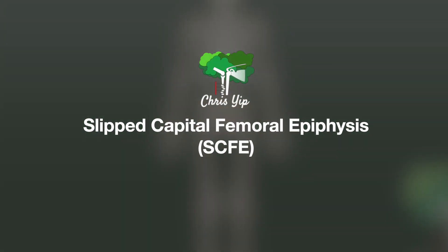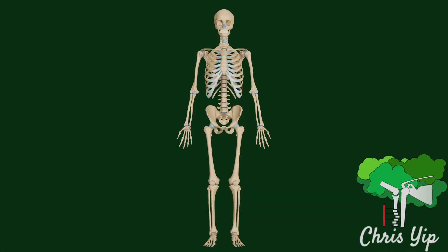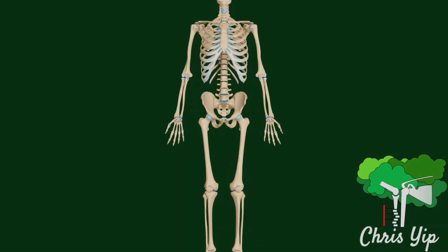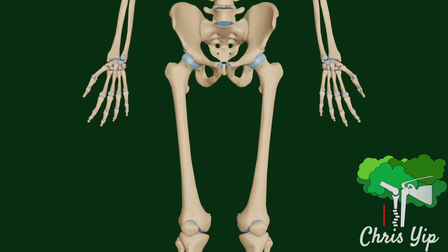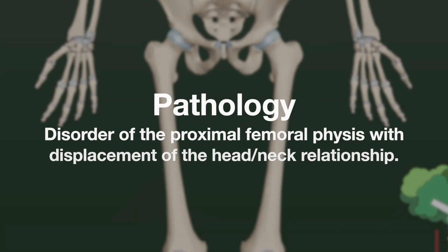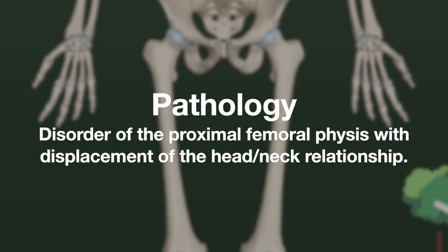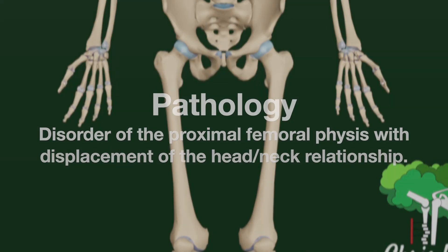The slipped capital femoral epiphysis, also known as SCFE, is a common cause of adolescent hip, groin, thigh, or knee pain. It is a disorder of the proximal femoral physis, which is the growth plate, with the displacement of the head and neck relationship.